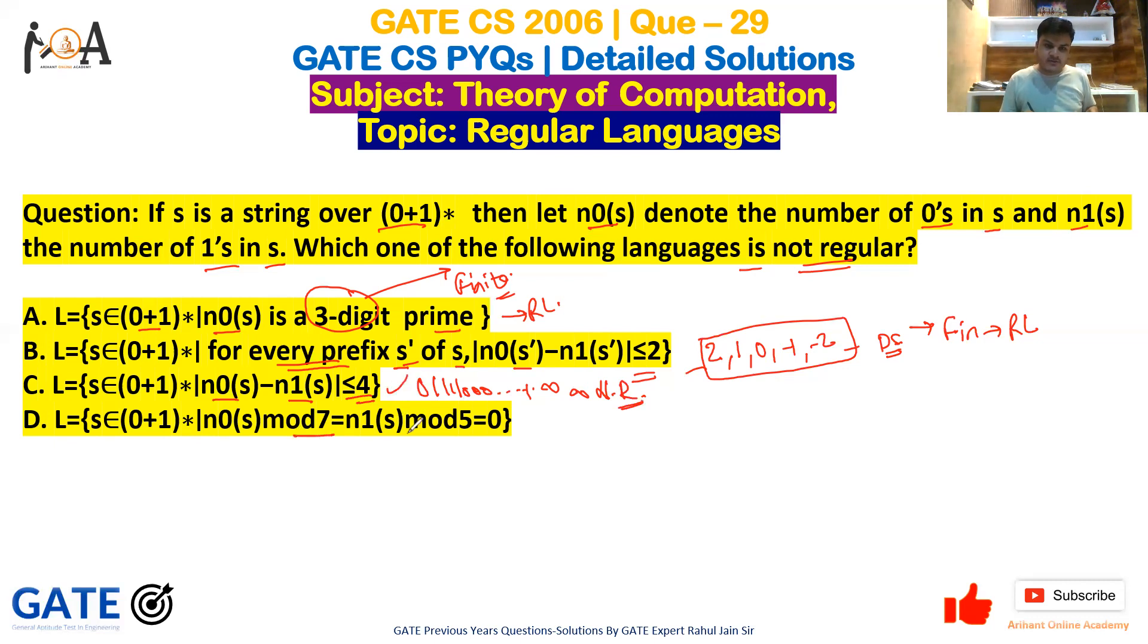So it is infinite. Hence it is not regular. It is not regular because infinite counting is required here. And in this case D: n0(s) mod 7 = n1(s) mod 5. There are particular finite states, so it is a finite language, means it is regular.